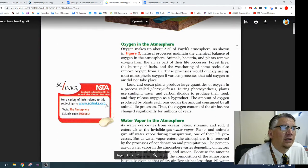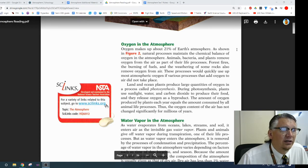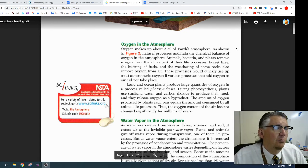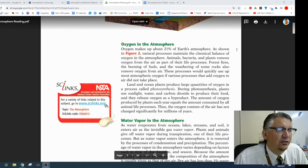Oxygen in the atmosphere. Oxygen makes up about 21% of Earth's atmosphere, as shown in Figure 2. Natural processes maintain the chemical balance of oxygen in the atmosphere. Animals, bacteria, and plants remove oxygen from the air as part of the life process. Forest fires, the burning of fossil fuels, and weathering of some rocks also remove oxygen from the air. These processes would quickly use up most atmospheric oxygen if various processes that add oxygen to the air did not take place.